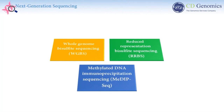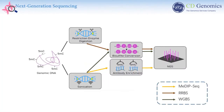Next Generation Sequencing, or NGS, has been widely used for genome-wide DNA methylation analysis, such as whole genome bisulfite sequencing (WGBS), reduced representation bisulfite sequencing (RRBS), and methylated DNA immunoprecipitation sequencing, or MeDIP-seq. MeDIP-seq utilizes an anti-methylcytosine antibody to immunoprecipitate DNA with methylated CpG sites.